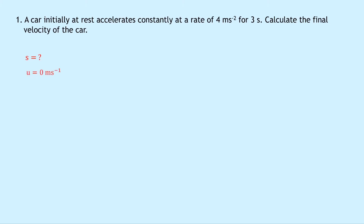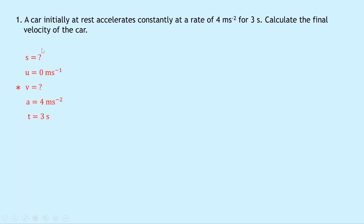We don't know the displacement in this question. We've got U equals zero meters per second because the car initially starts at rest. We've got V equals question mark — we're trying to find the final velocity. We know the acceleration is four meters per second squared and the time is three seconds. I'm putting a little star next to V because we've got two unknowns, but we're asked to find the final velocity, so we can pretty much just ignore S. The star shows me which quantity I'm trying to find.